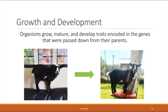Property four: growth and development. All living organisms grow, mature, and develop the traits encoded in the genes passed down from their parents. As an example, here is my goat Fiona when she was a little baby, and here she is grown up into the big, beautiful goat she is today.